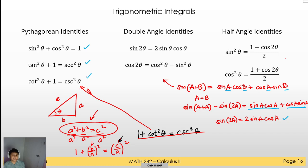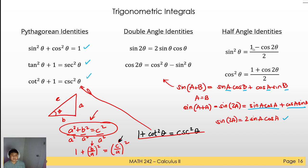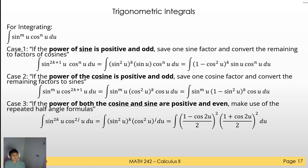For the half angle identities, sin²θ = (1 − cos2θ)/2 and cos²θ = (1 + cos2θ)/2. They have the same structure — the only difference is the sign. You can remember that sine has a negative sign (like a 'sin'), while cosine is positive.